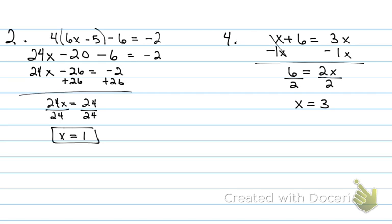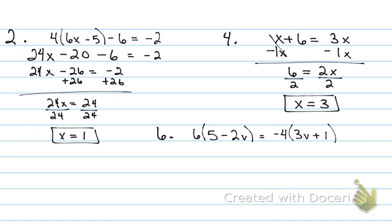You've got to understand what to do when there are variables on both sides. Number six is about identifying whether there is one solution, no solution, or infinite solutions. One solution is exactly what we found in numbers two and four — there was an answer. No solution or infinite solution comes into play when my variables completely cancel out. I won't know which until I unpack the problem.